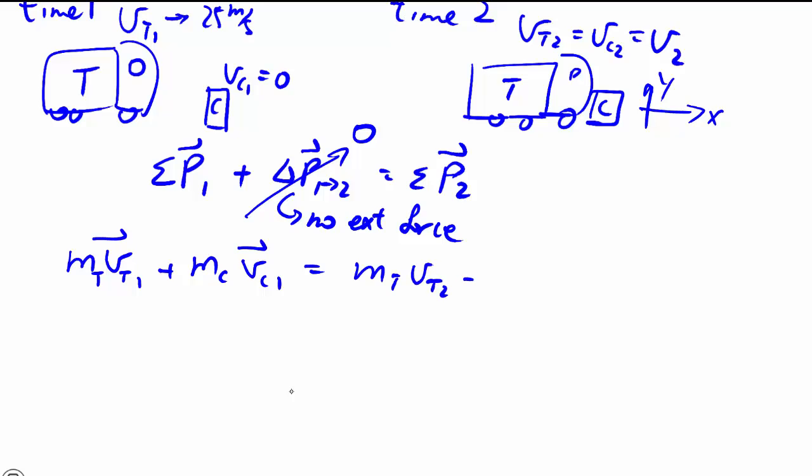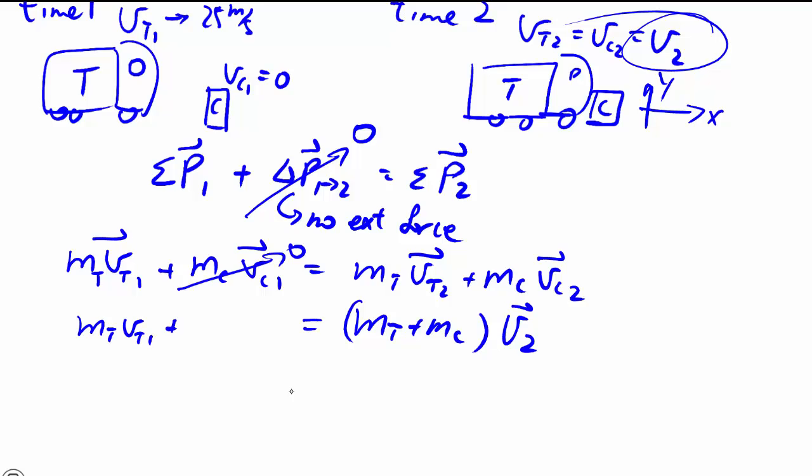And then we have the same thing for time 2. Of course this you can factor out the speed because they're the same. And this is zero over there.